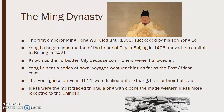The first emperor, Ming Hongwu, was succeeded by his son Yongle. Yongle began construction of the imperial city in Beijing in 1406 and would move the capital there in 1421. This is what is now called the Forbidden City because, especially at that time, if you were a commoner you were not allowed to enter the imperial palace.